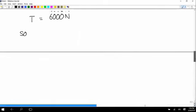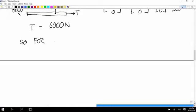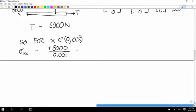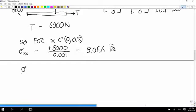So now that we have the internal loads, for any x values between 0 and 0.5, sigma_xx is equal to positive 8,000 divided by 0.001. And so that's 8.0 times 10 to the 6th Pascal. And if you wanted to give the full stress tensor, that's the xx element. So that's 8.0, 0, 0, 0, 0, 0 is everywhere else in megapascals.